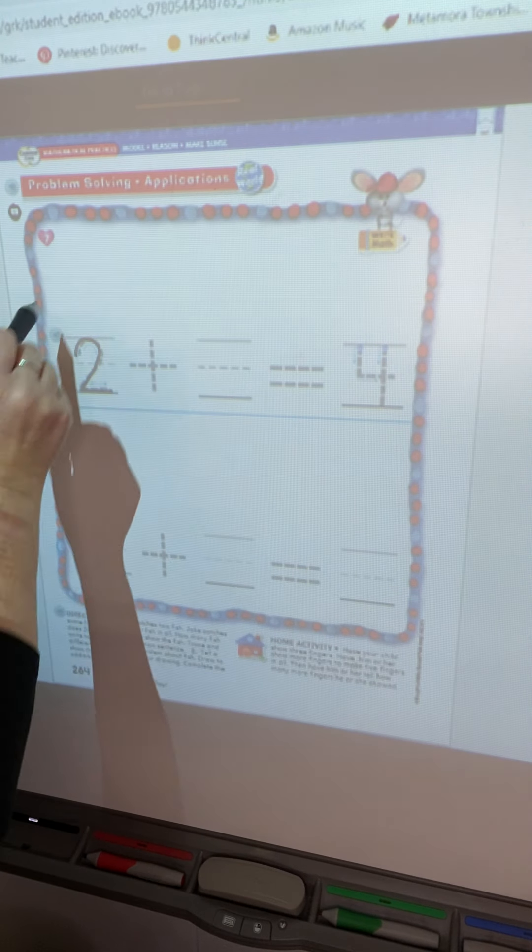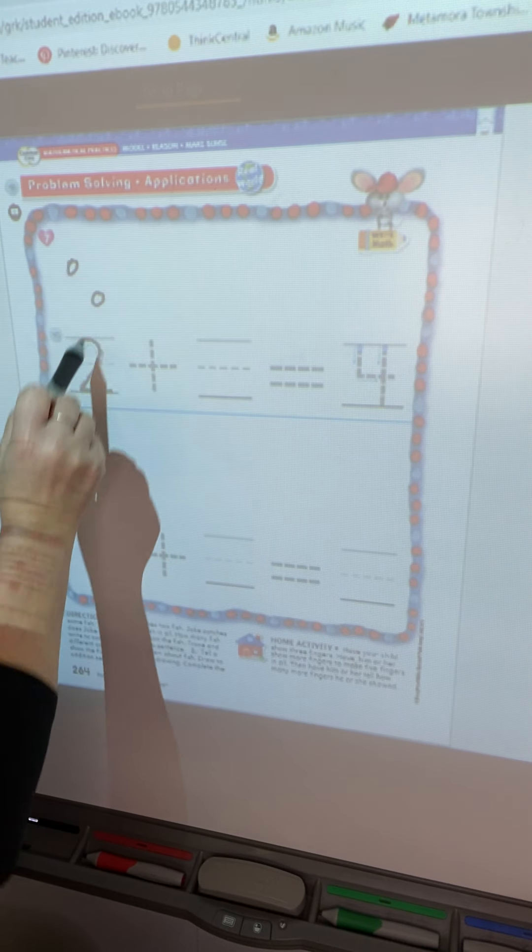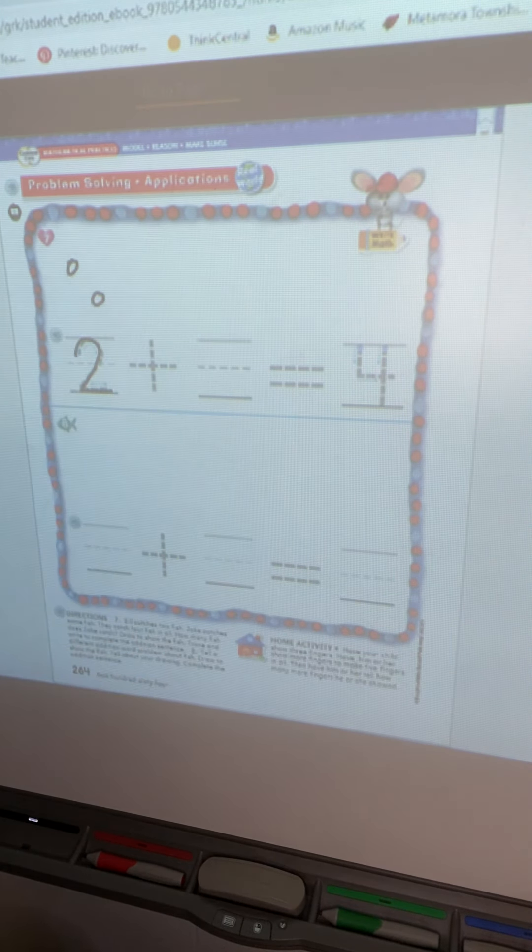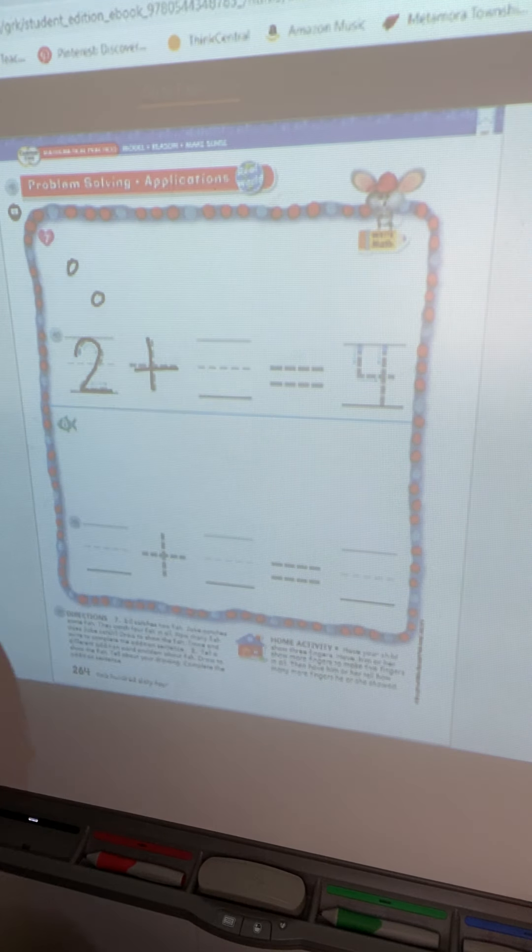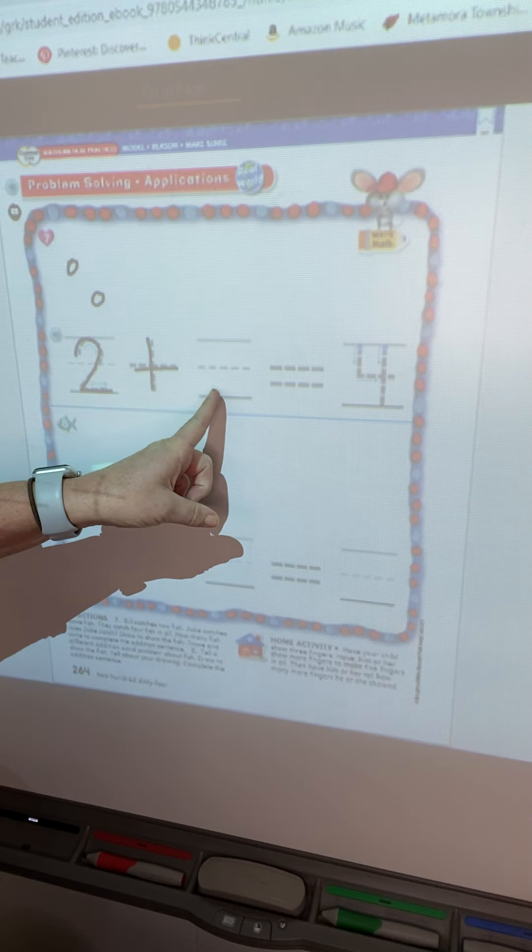You guys just amaze me every day with how much smarter you are getting, especially with addition. Okay. On this last page, we're going to look. We have a number sentence on the top number seven. We have a number sentence, but it's missing some information and there's nothing there to tell us what's going to happen. So Miss Vogel is going to give you a little bit of a story.